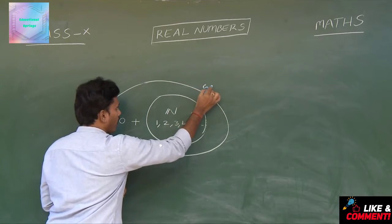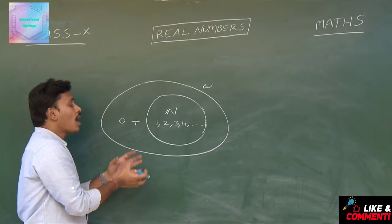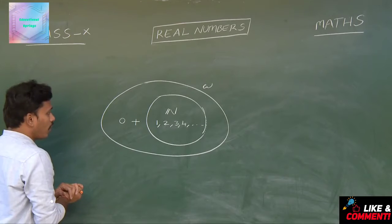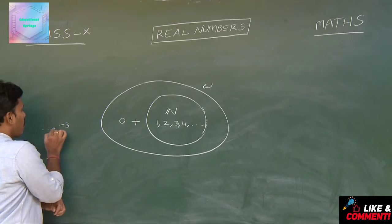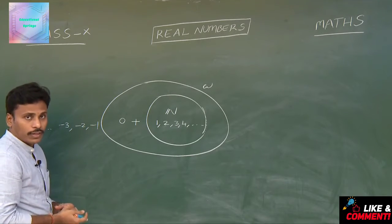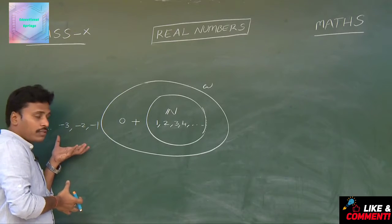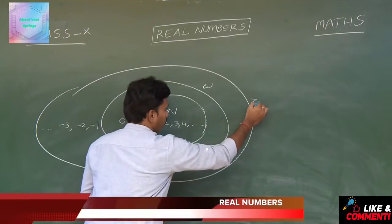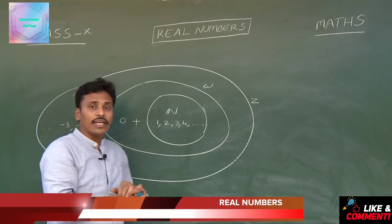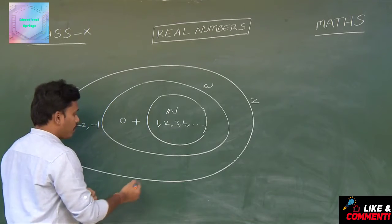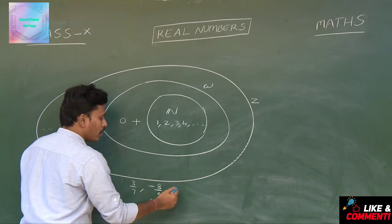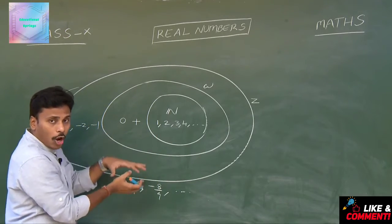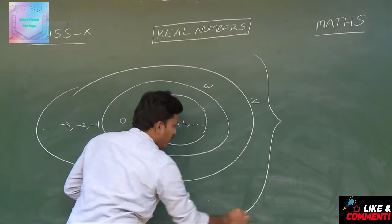If you add the opposite numbers of these positive numbers — the negatives of naturals, which are the negative integers — to the whole numbers, you get minus 3, minus 2, minus 1, and so on. The total combination of negative numbers, 0, and naturals together are termed as integers. If you then add fractions like 3 by 7 or minus 8 by 9 to the collection of integers, this newly formed collection of integers along with fractions is called rationals.